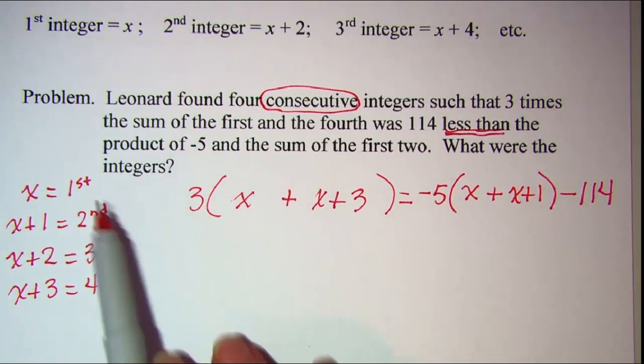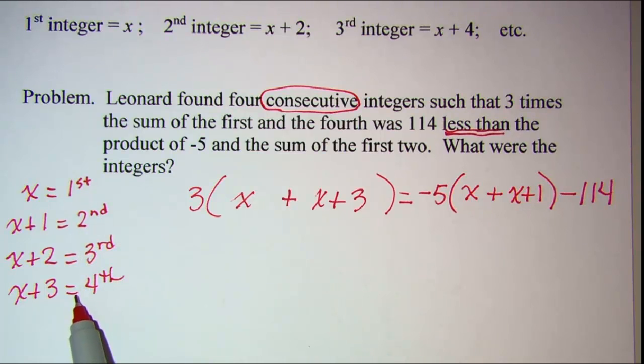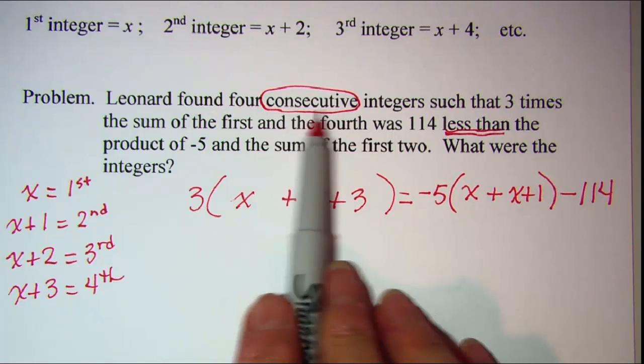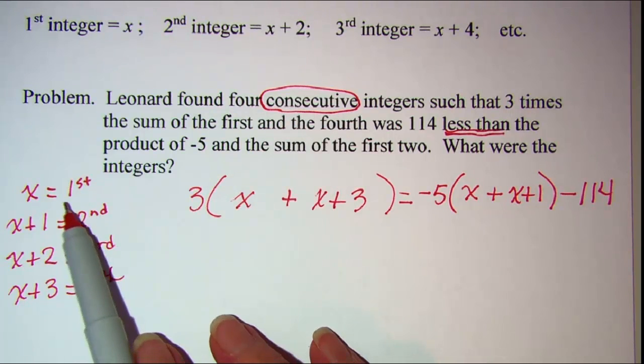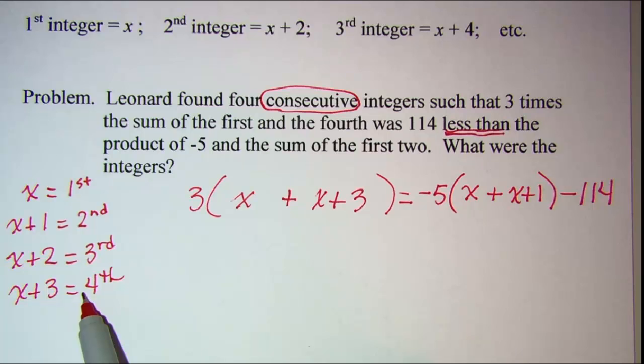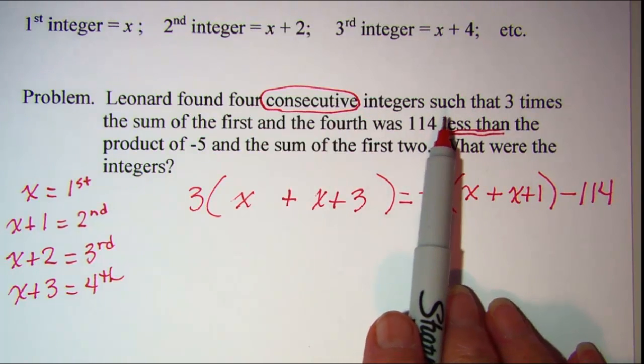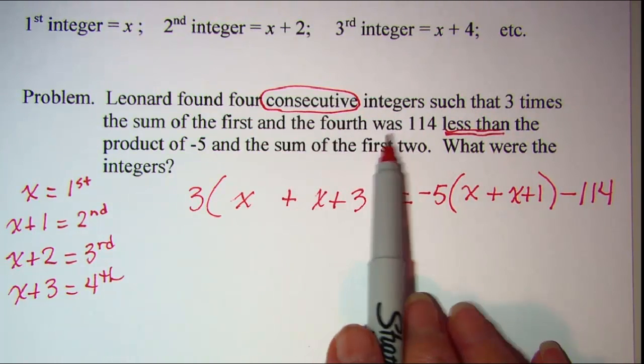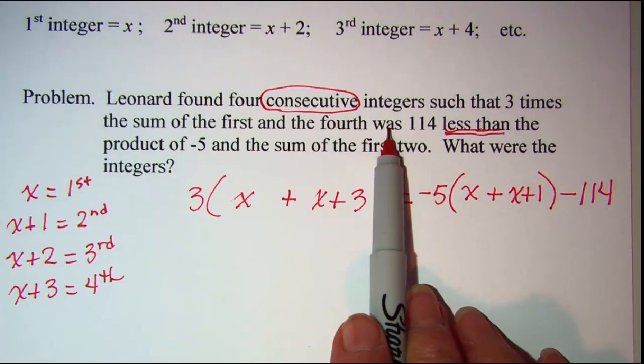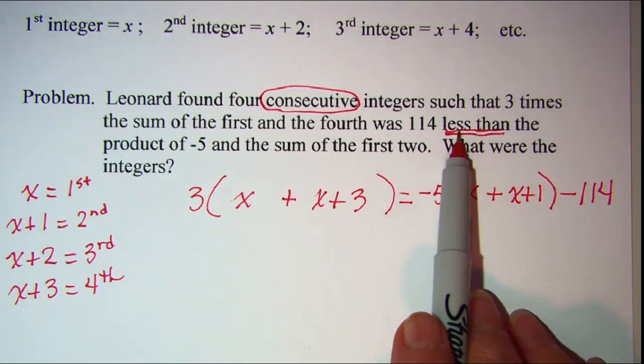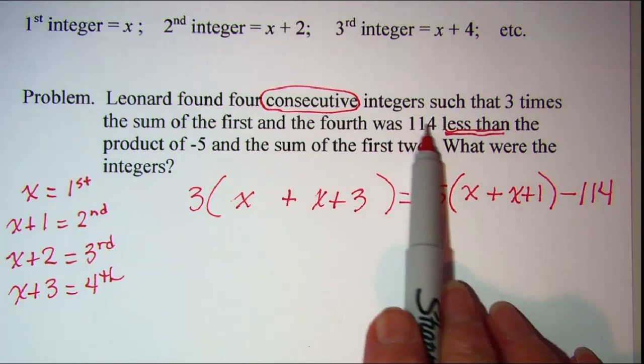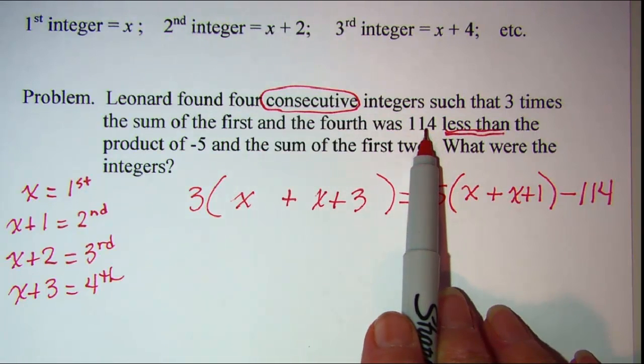So basically start out by setting up your expressions that you need. If you're dealing with just consecutive integers then just add one each time. If you're doing even or odd you'll add two each time and then translate. The verb is where the equals goes and be cautious if you see the words less than because this number then has to scoot over and put a negative in front of it.